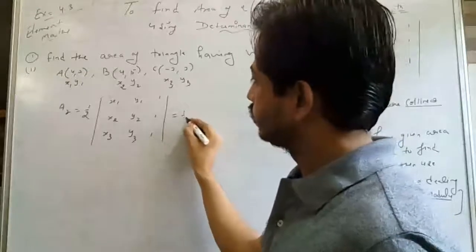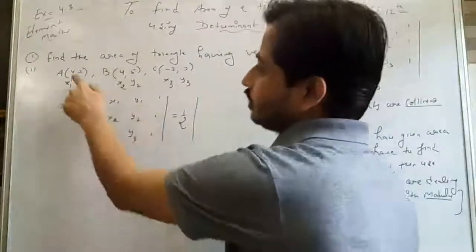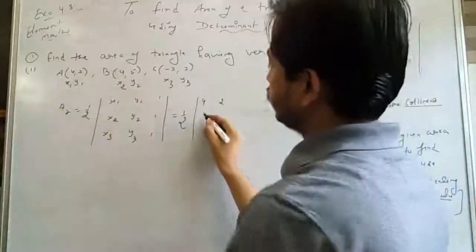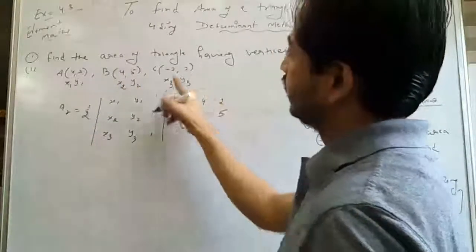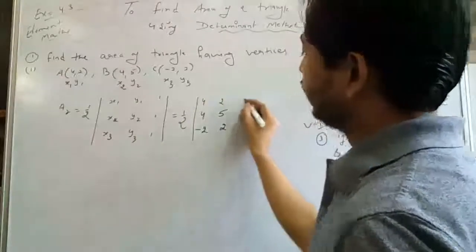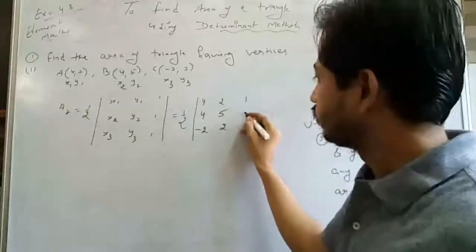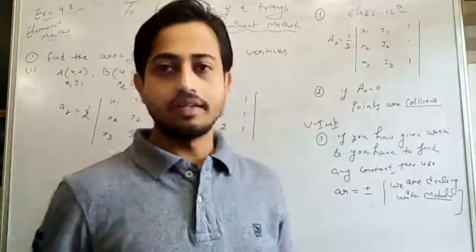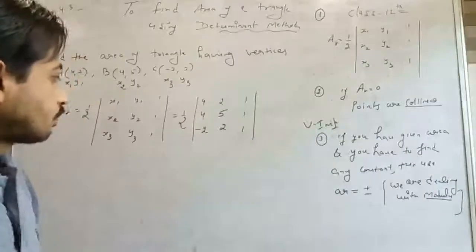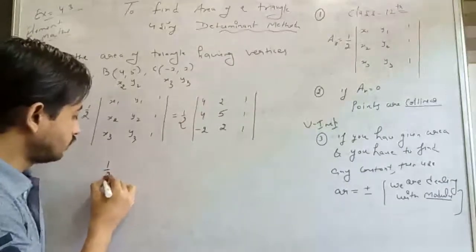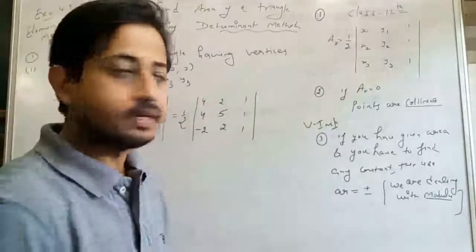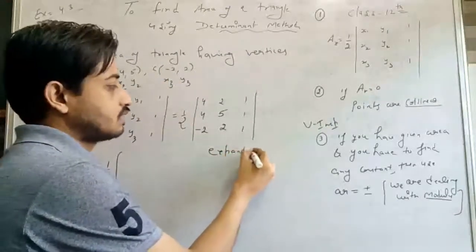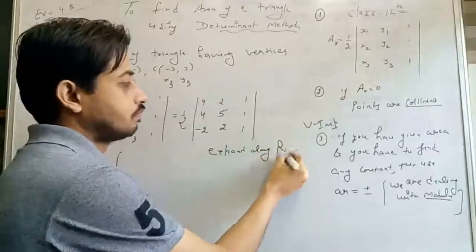Now you have to simplify and get the value of the Determinant. I am going to expand along R1. The elements of R1 are 4, 2, 1 with signs positive, negative, positive. If I select element 4, I remove its row and column. For element 2, I remove column C2 and the first row — the remaining minor is (4, 1; -2, 1). For element 1, I remove column C3 and first row — the remaining minor is (4, 5; -2, 2).